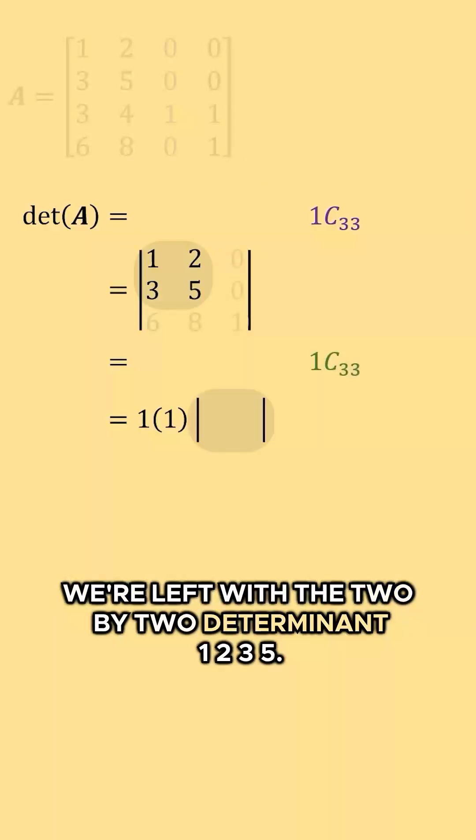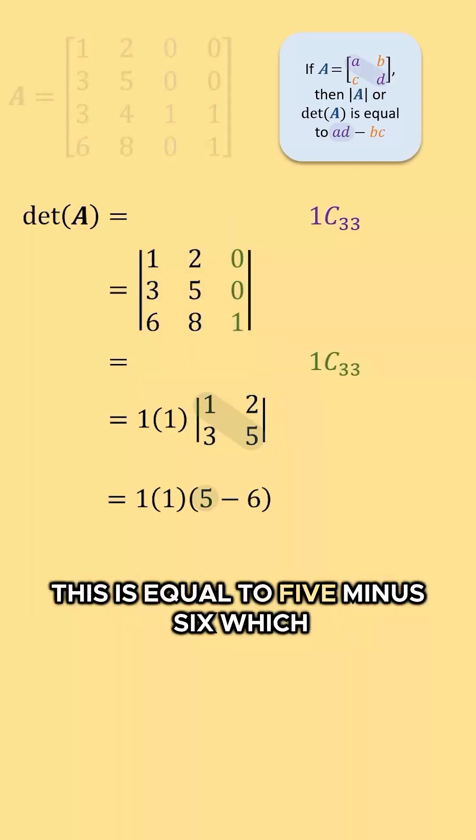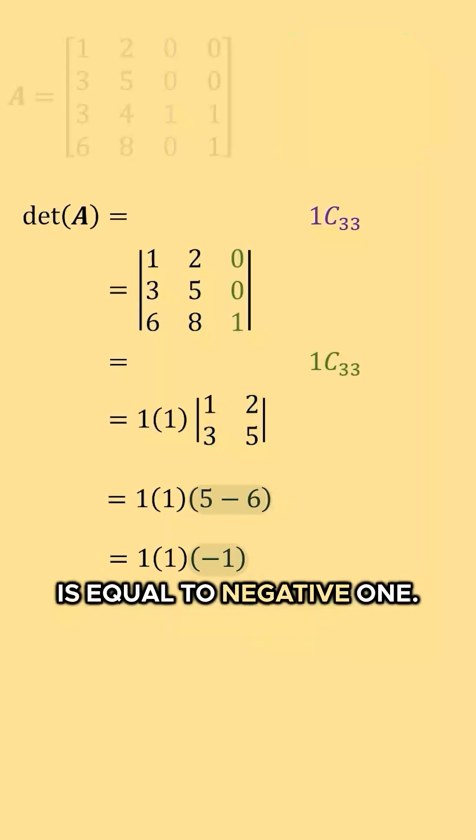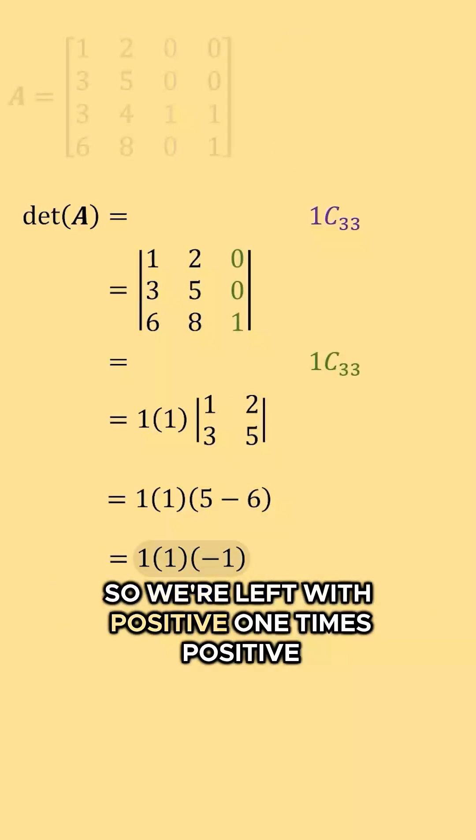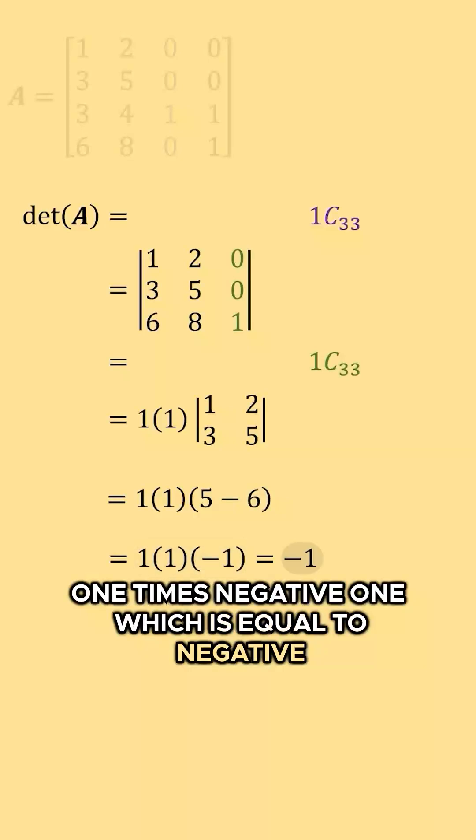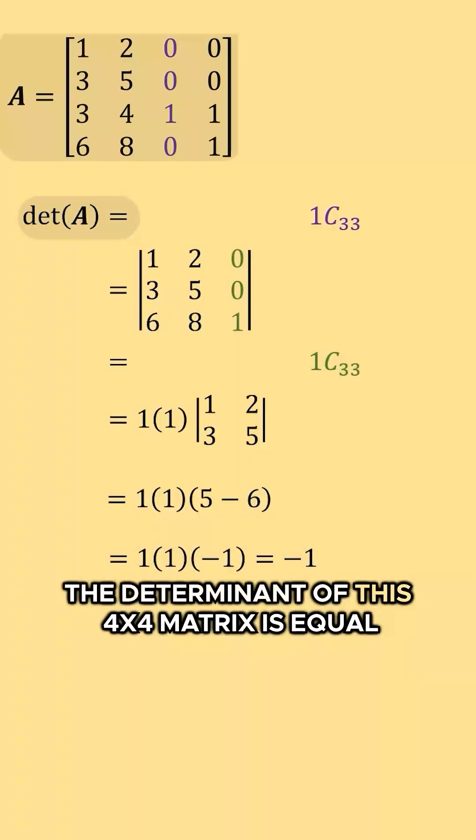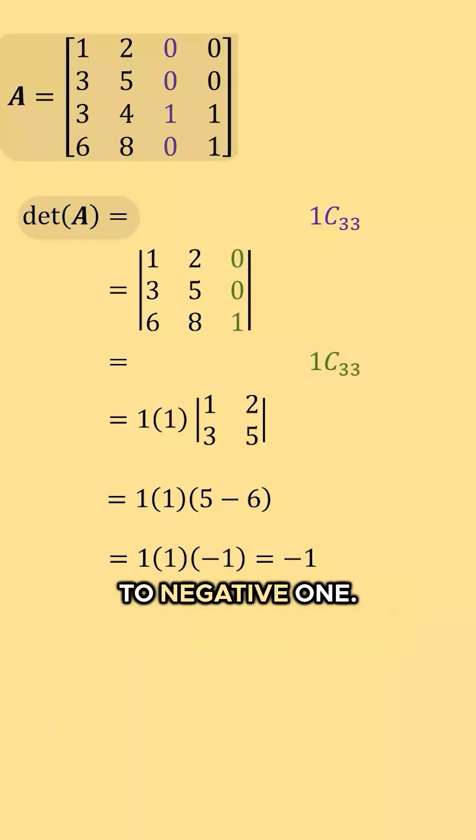We're left with the 2x2 determinant 1, 2, 3, 5. This is equal to 5 minus 6, which is equal to negative 1. So we're left with positive 1 times positive 1 times negative 1, which is equal to negative 1. The determinant of this 4x4 matrix is equal to negative 1.